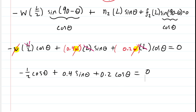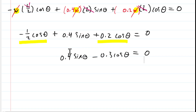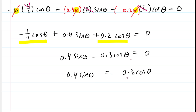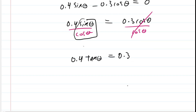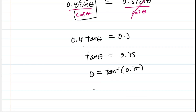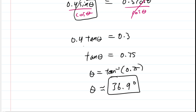Gathering like terms: −0.5 cos θ + 0.2 cos θ gives −0.3 cos θ. Adding 0.3 cos θ to both sides gives 0.4 sin θ = 0.3 cos θ. Dividing both sides by cos θ gives 0.4 tan θ = 0.3, using the identity sin/cos = tan. Dividing by 0.4 gives tan θ = 0.75. Taking the inverse tangent on both sides, and making sure the calculator is in degree mode, gives θ ≈ 36.9°, which is the final answer.